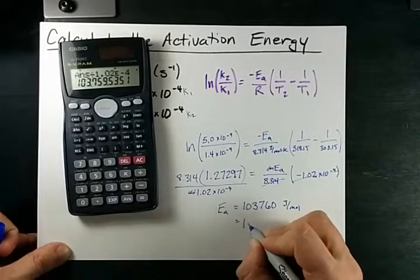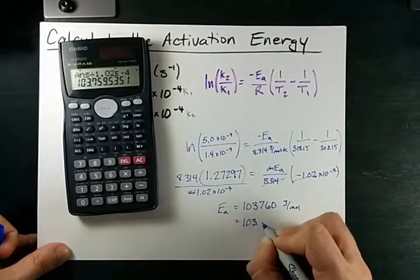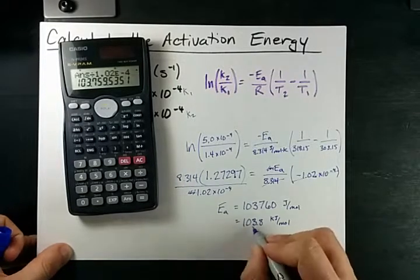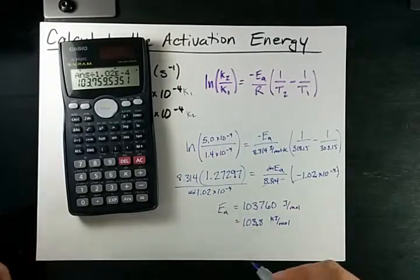Which if I'm going to convert it into kilojoules per mole divided by 1000 gives me 103.8 kilojoules per mole.